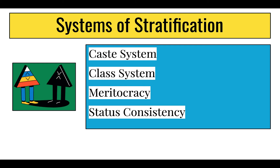Moving on to the caste system — a form of social stratification with no social mobility. Status is determined by your family history and background and cannot be changed. India is the country most closely associated with the caste system, and even though it has been dismantled, its residual presence in Indian society is deeply embedded. Apartheid is the term for the system of segregation of racial and ethnic groups that was legal in South Africa between 1948 and 1991.